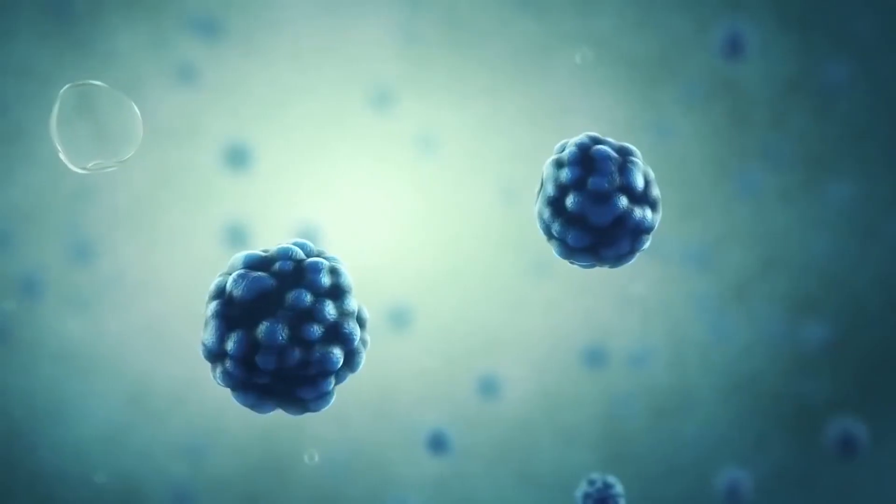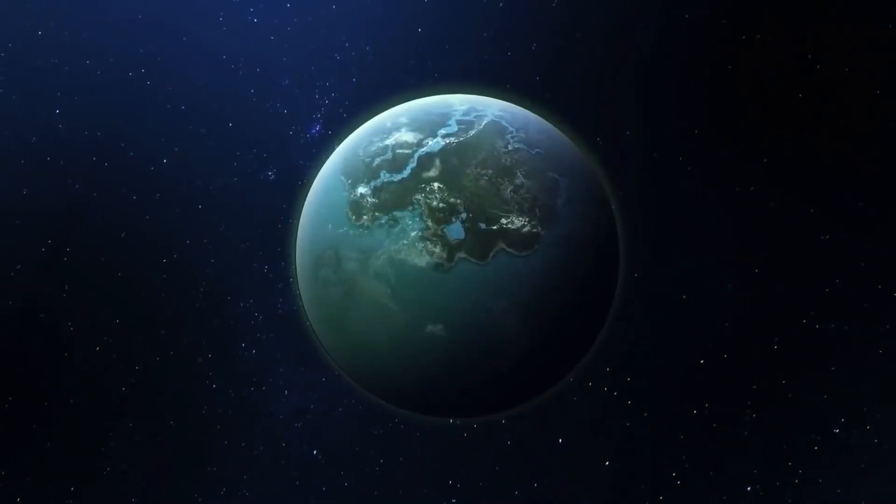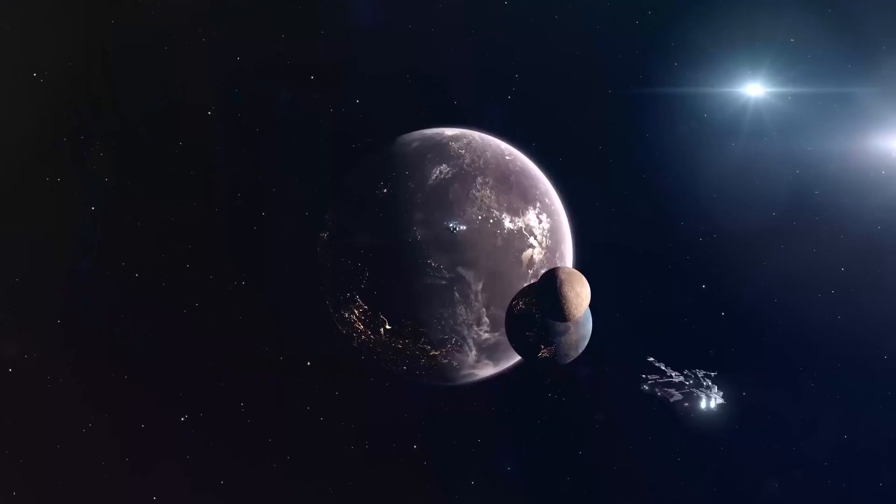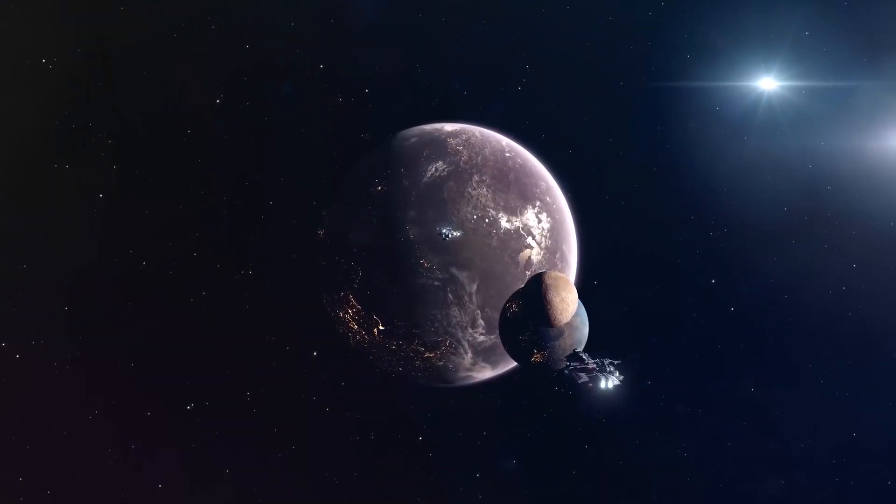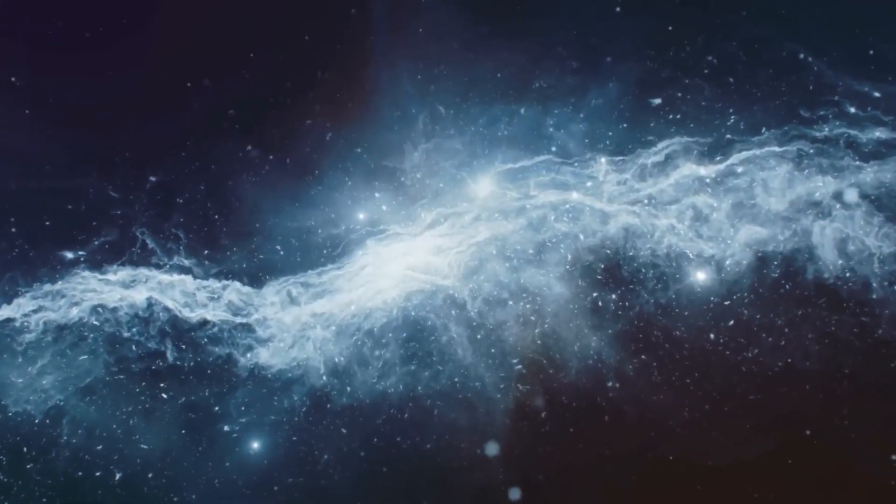Kepler has been carrying out observations for long enough now that at least some potentially habitable worlds will have transited their host stars the minimum of three times required for firm detection. And the longer the satellite goes on observing, the more transits by such planets will be observed.